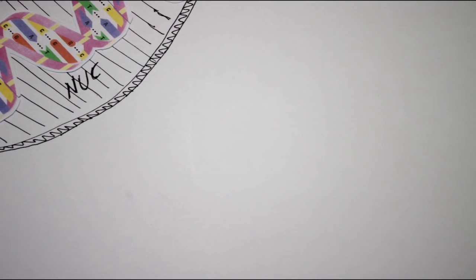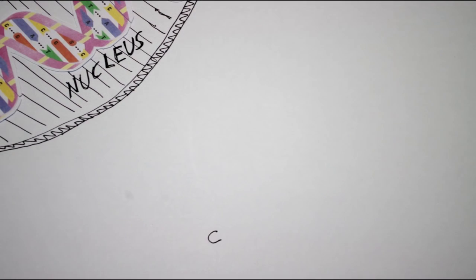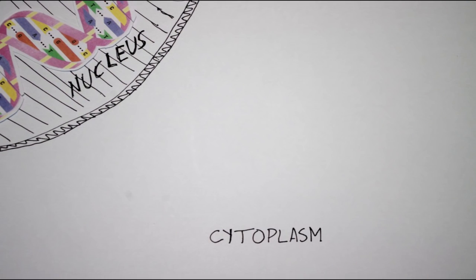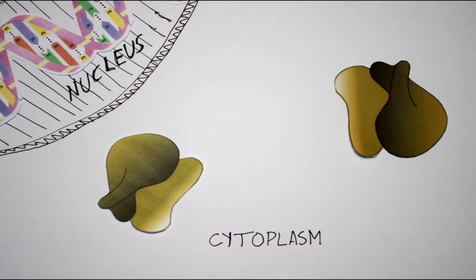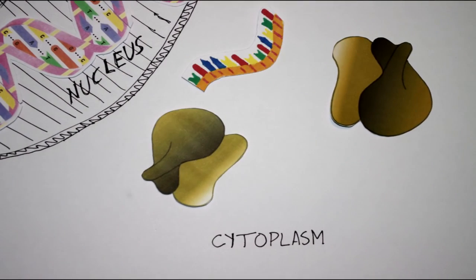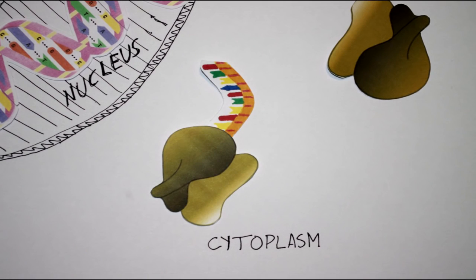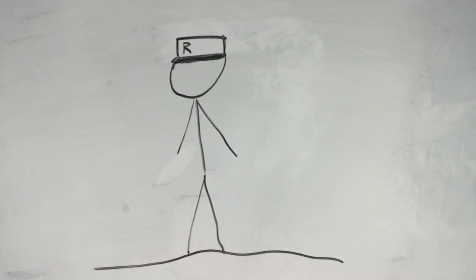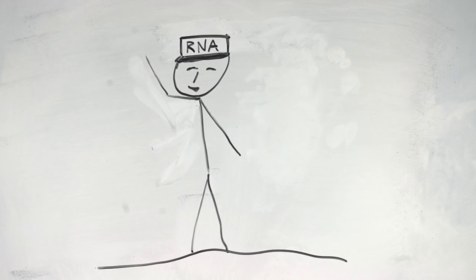There is also another problem. DNA is located in the nucleus, and the proteins are synthesized in cell organelles in the cytoplasm, the ribosomes. That's where the RNA comes in. It acts as an errand boy, carrying the instructions from the nucleus to the ribosomes, and then helps to translate it.